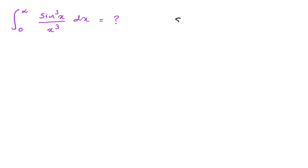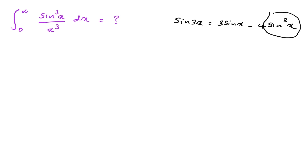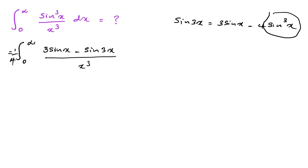We know the triple angle formula: sine of 3x equals 3 times sine of x minus 4 times sine cubed of x. We can isolate sine cubed of x and substitute it in. So we have outside the integral one-quarter, giving us: one-quarter times the integral from 0 to infinity of (3 sine x minus sine 3x) over x cubed dx.